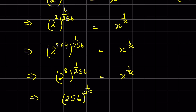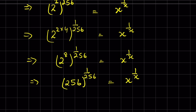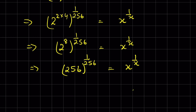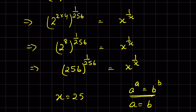Since 2 raised to the power 8 is 256, we have 256 raised to the power 1 upon 256, equal to x raised to the power 1 upon x. This is in the form a raised to the power a equals b raised to the power b, in which case a equals b. Therefore x is equal to 256.